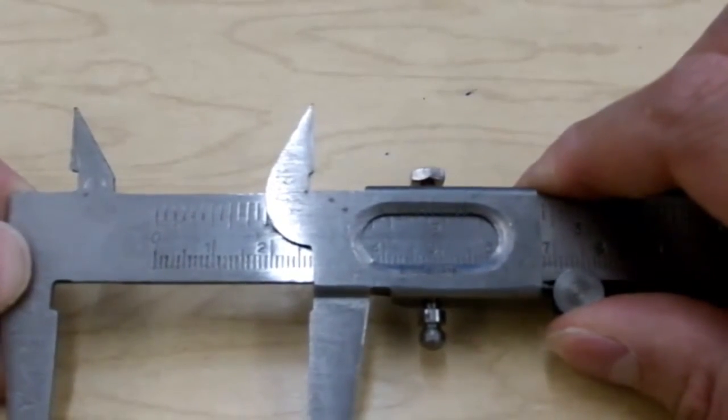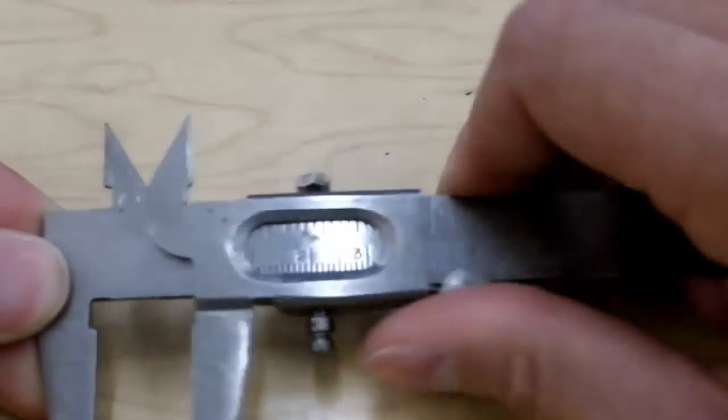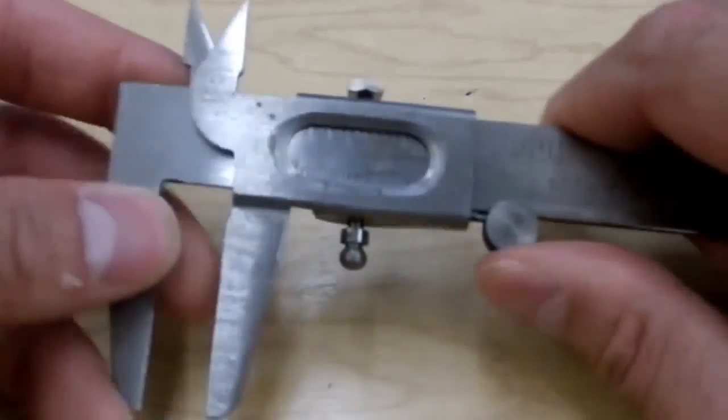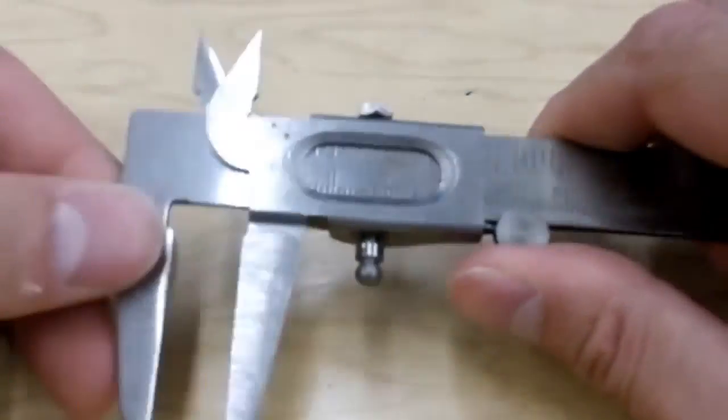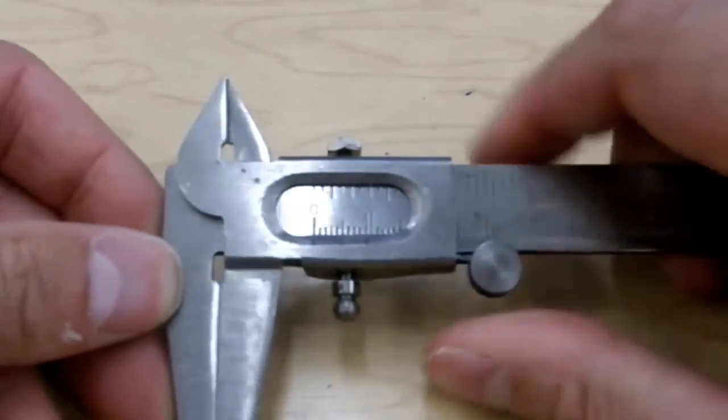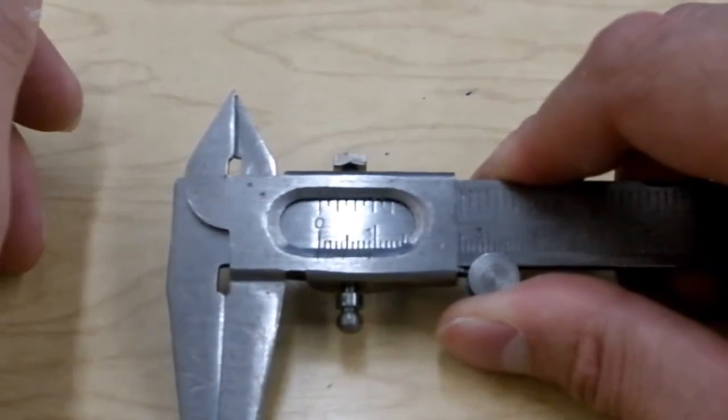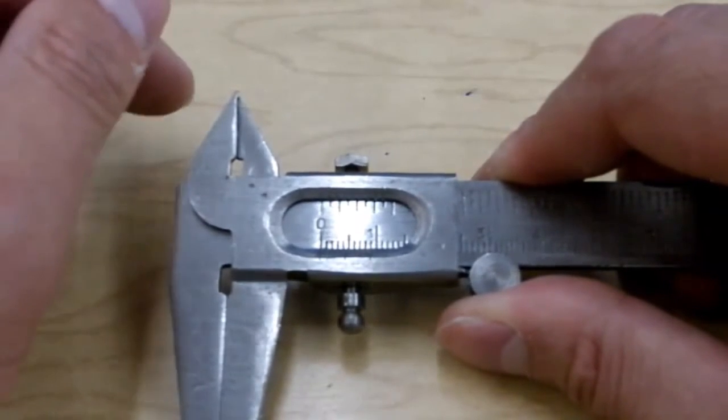The last thing you want to check with a vernier caliper is that your zero reading is good. And you just have to close the jaws up. Sometimes you want to wipe off the grime out here. And you just take a look, close it in. Make sure that when it should read zero, it is in fact reading zero.